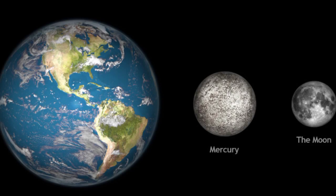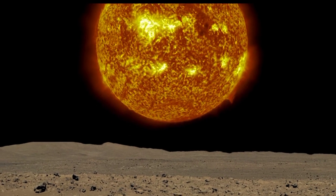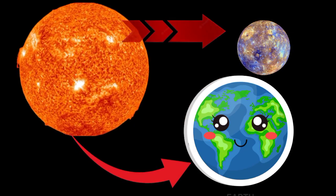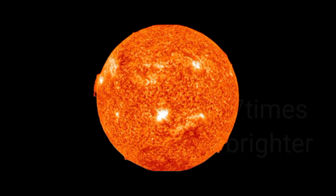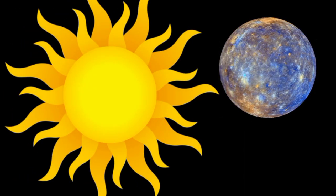Mercury is only slightly larger than Earth's Moon. From the surface of Mercury, the Sun would appear more than three times as large as it does when viewed from Earth, and the sunlight would be as much as seven times brighter.